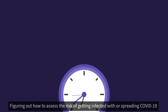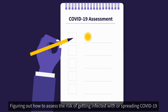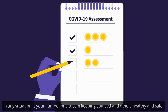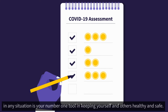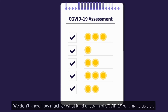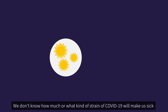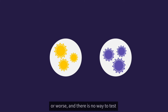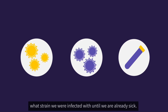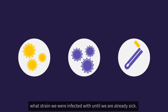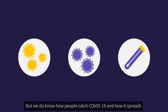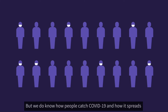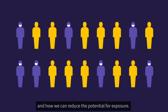Figuring out how to assess the risk of getting infected with or spreading COVID-19 in any situation is your number one tool in keeping yourself and others healthy and safe. We don't know how much or what kind of strain of COVID-19 will make us sick or worse, and there is no way to test what strain we were infected with until we are already sick. But we do know how people catch COVID-19, how it spreads, and how we can reduce the potential for exposure.